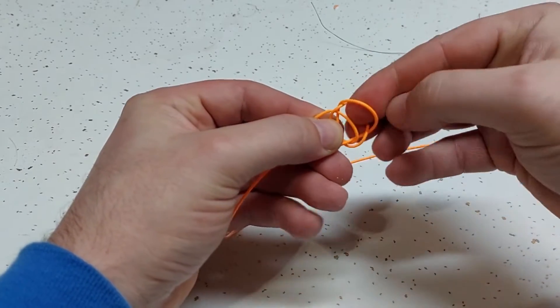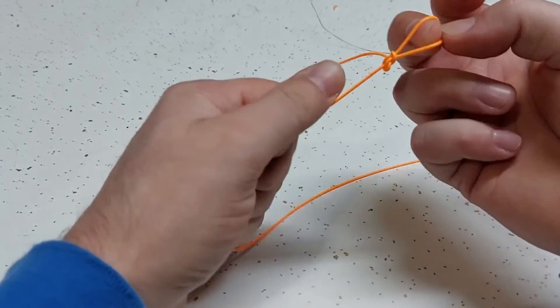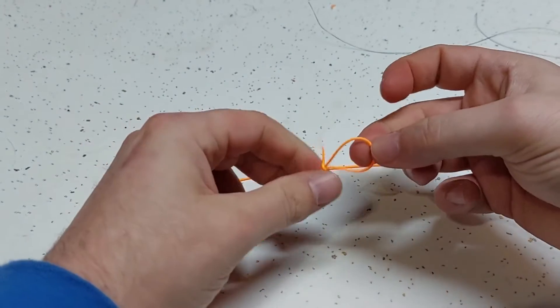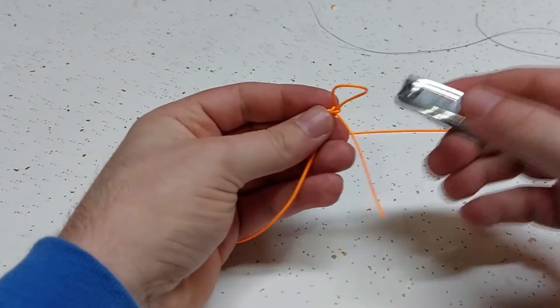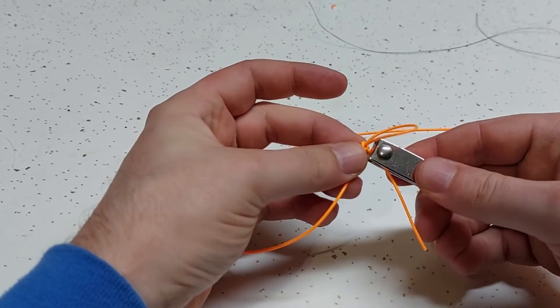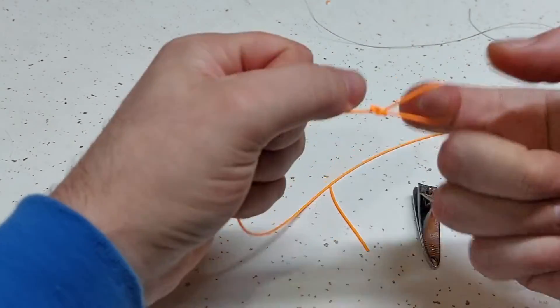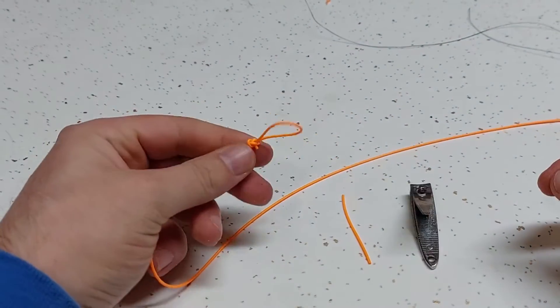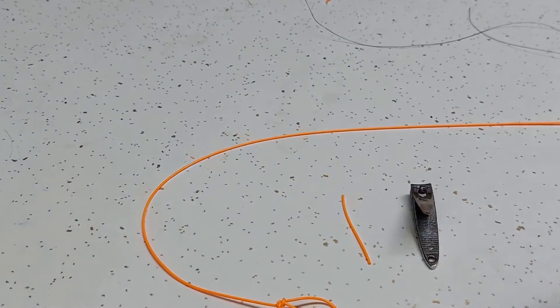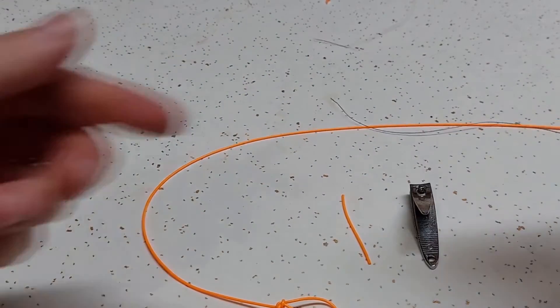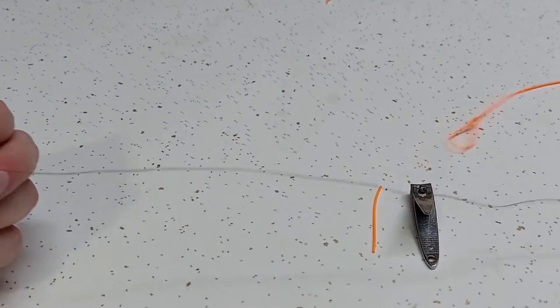...of the line that you laid down in the middle, and then pull it tight so that way you got your fly loop for your perfection knot. Now I would usually do that a little bit smaller, but you get the picture. You can play with that and figure it out on your own.